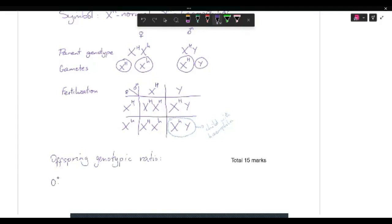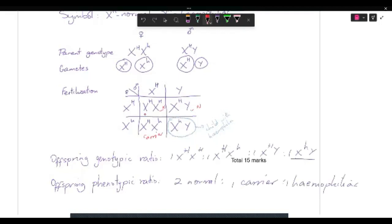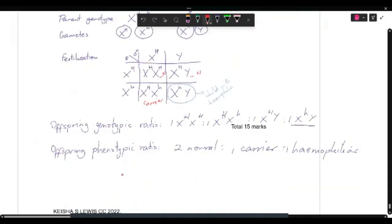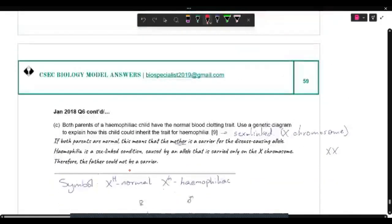So you would include your offspring genotypic ratio here. And your offspring genotypic ratio. So two normal, one carrier, one hemophilia. And that would be your complete genetic diagram. And that's it for 2018, January 2018.